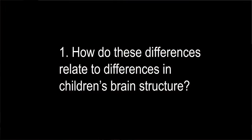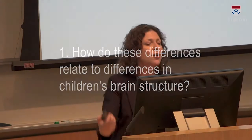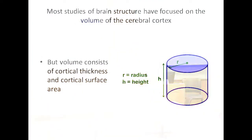Most studies of brain structure in children have focused on the volume of the cerebral cortex — the thin layer of cells on the outer surface of the brain that does most of the cognitive heavy lifting. But volume is composed of two different measures: cortical thickness, analogous to the height of a cylinder, and surface area, analogous to the area of the circle on top. These two features of brain structure actually operate in opposite directions over the course of childhood and adolescence.